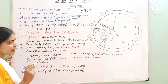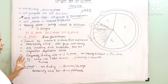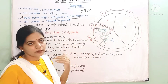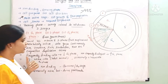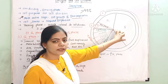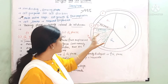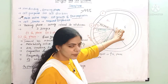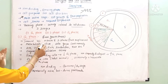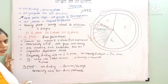G1 phase is the interval between the M phase and the S phase. So G1 is the interval between mitosis or M phase and the S phase, where DNA replication occurs. G1 comes between the end of mitosis and the beginning of DNA replication.